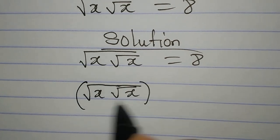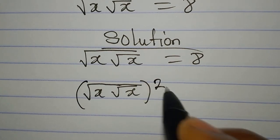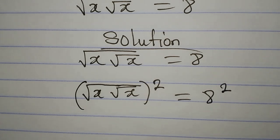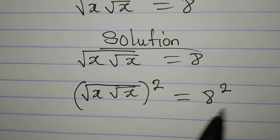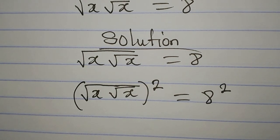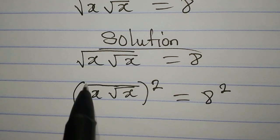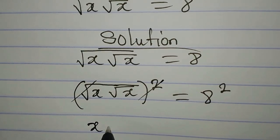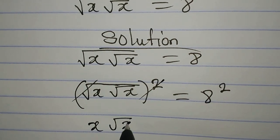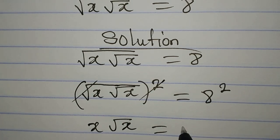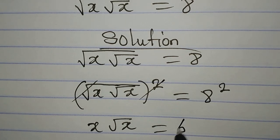Square root of x times square root of x, we square this, and it equals 8 squared as well. Remember, whatever you do on both sides of the equation will not change the equation. So the roots cancel, giving us x times root x equal to 8 times 8, which gives us 64.